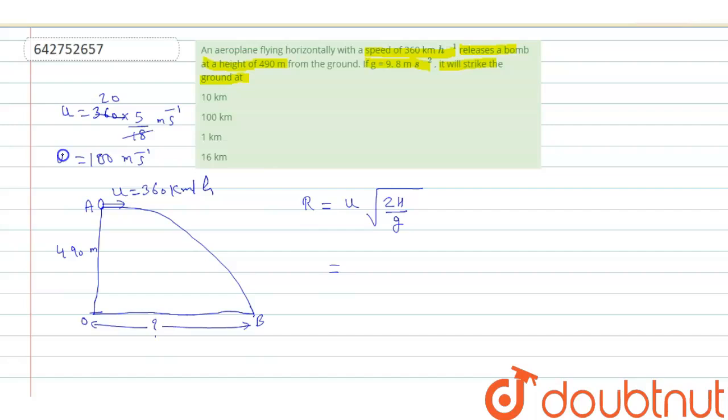Use it here: 100 multiply root 2h. h is 490 divided by g, that is 9.8.